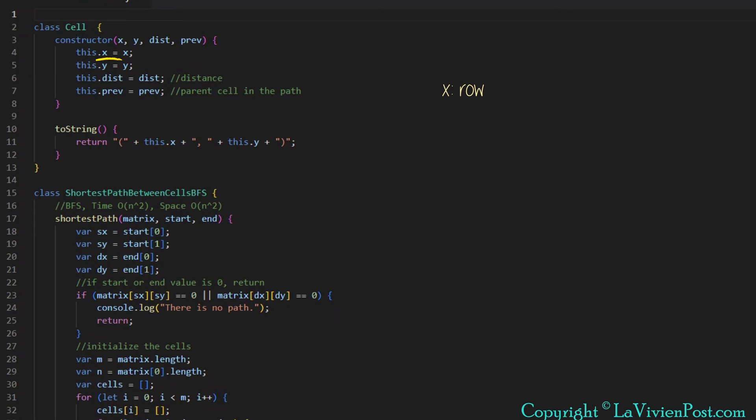X is the row number in the matrix. Y is the column. Dist is used to keep track the distance from this cell to the source cell. Prev records the last visited cell or its parent cell. It helps to find the sequence of the cells along the path.